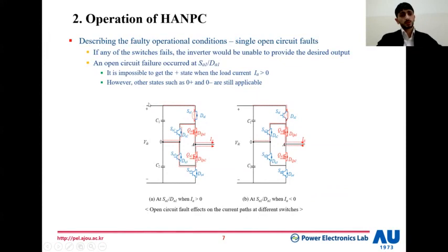Now, moving to the faulty conditions. Under the faulty conditions, the inverter is unable to provide the desired voltage. For example, in this case, we have an open circuit failure at the upper IGBT switch, SA1, DA1. In this case, it is impossible to get the positive state while the current is in the positive direction when you have an open circuit in the switch, or in the negative direction when we have an open circuit at the associated diode. However, the other states, such as negative, zero positive and zero negative are still applicable in this case.